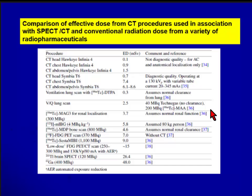Looking at effective dose from CT procedures compared to various radiopharmaceuticals: Gallium at 400 megabecquerels gives 48 mSv effective dose. This gives you a spectrum of what effective dose is from different tracers and pharmaceuticals, which is important to be aware of.